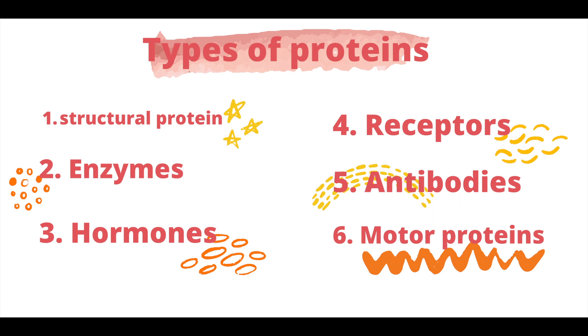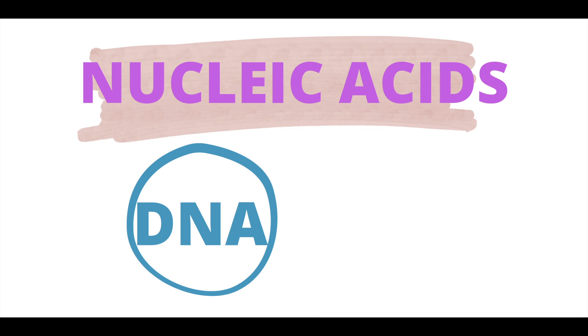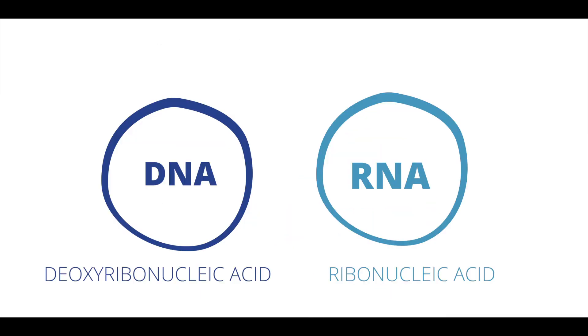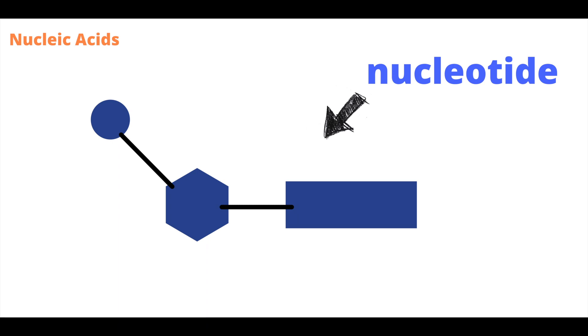We're moving on to our last macromolecule: nucleic acids. Nucleic acids include DNA (deoxyribonucleic acid) and RNA (ribonucleic acid). They are made of monomers called nucleotides. Nucleotides consist of three portions: a phosphate, a sugar, and a nitrogenous base.